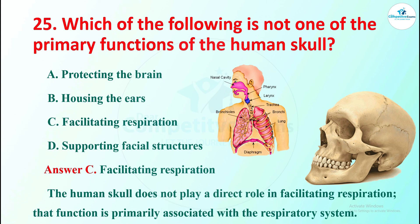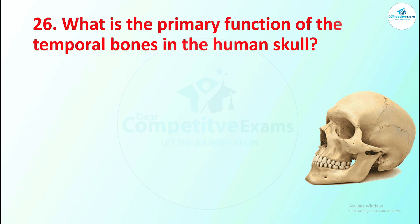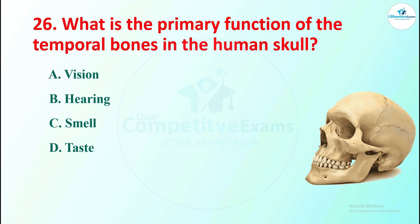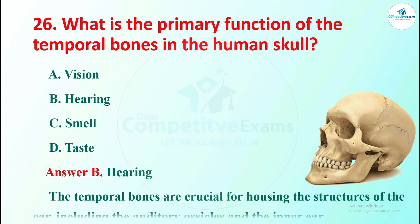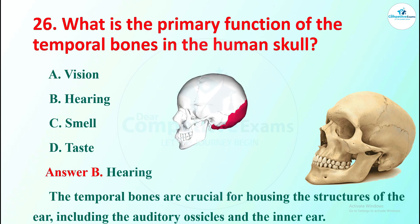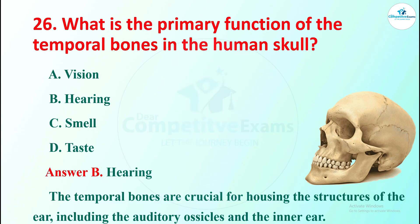Question 26: what is the primary function of the temporal bones in the human skull? Options are vision, hearing, smell, or taste. The right answer is hearing. The temporal bones are crucial for housing the structures of the ear.